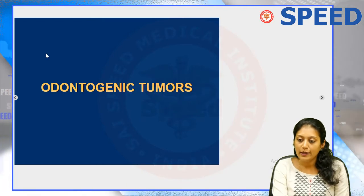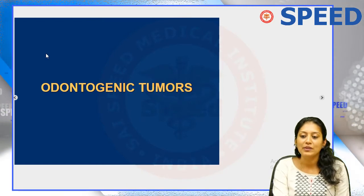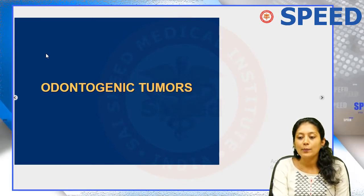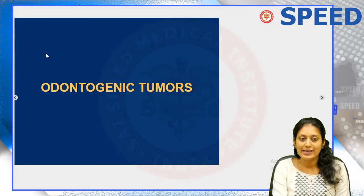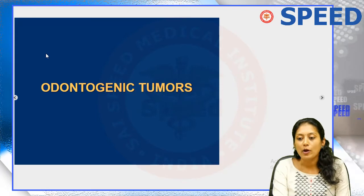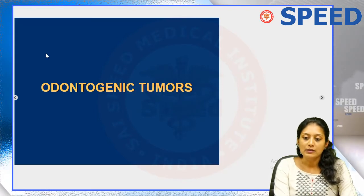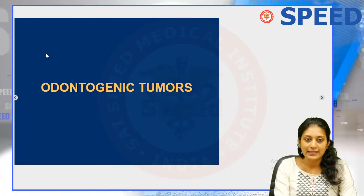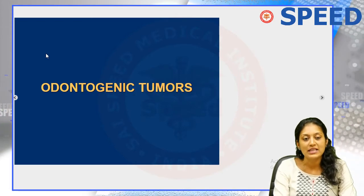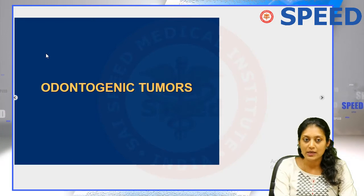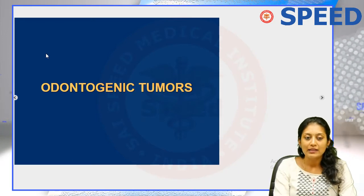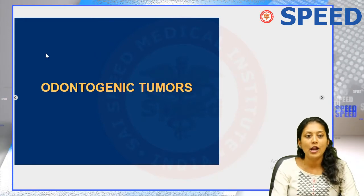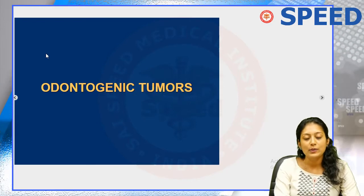Before we go into the detail of an odontogenic tumor, when will you call something a tumor? According to the strict definition, a tumor is abnormal proliferation of tissue — some stimulus is causing abnormal proliferation. In a normal situation, if the stimulus is removed, the proliferation of tissue should stop. That condition is referred to as hyperplasia. Because of the stimulus the cells are proliferating, but when you remove the stimulus, the proliferation stops. This is hyperplasia.